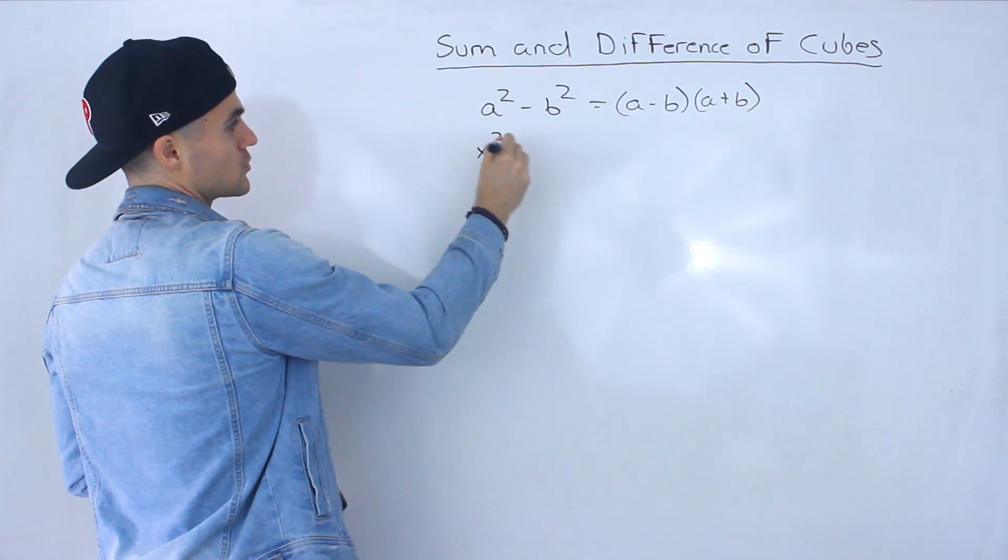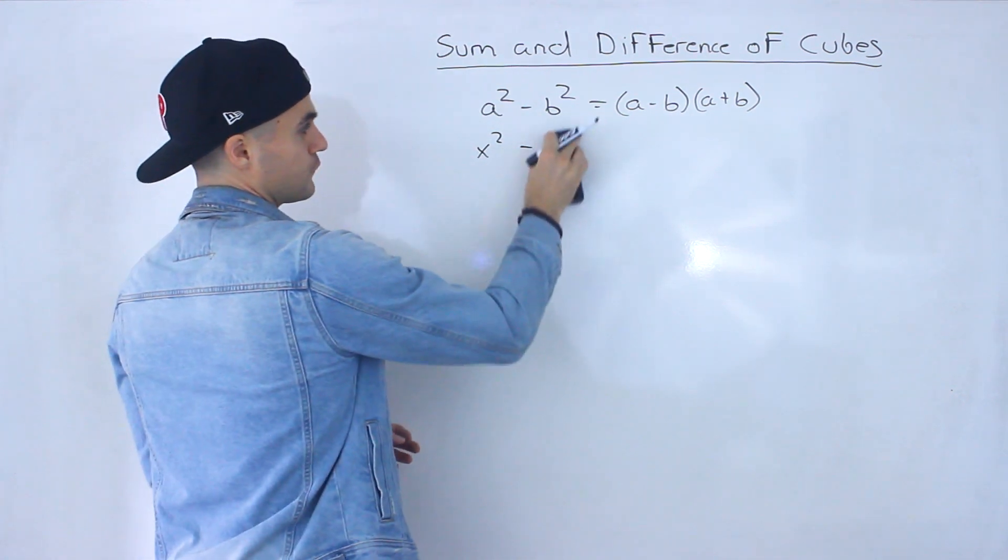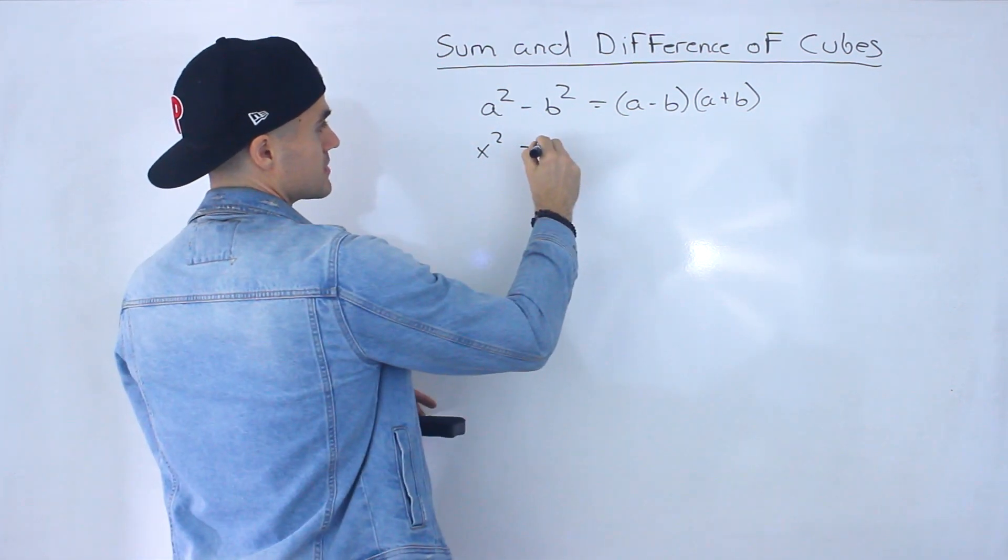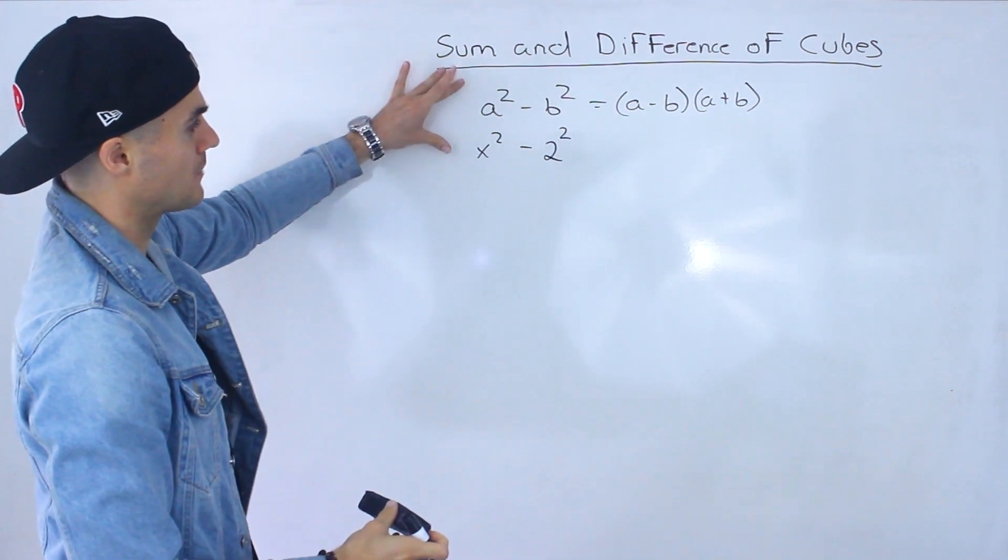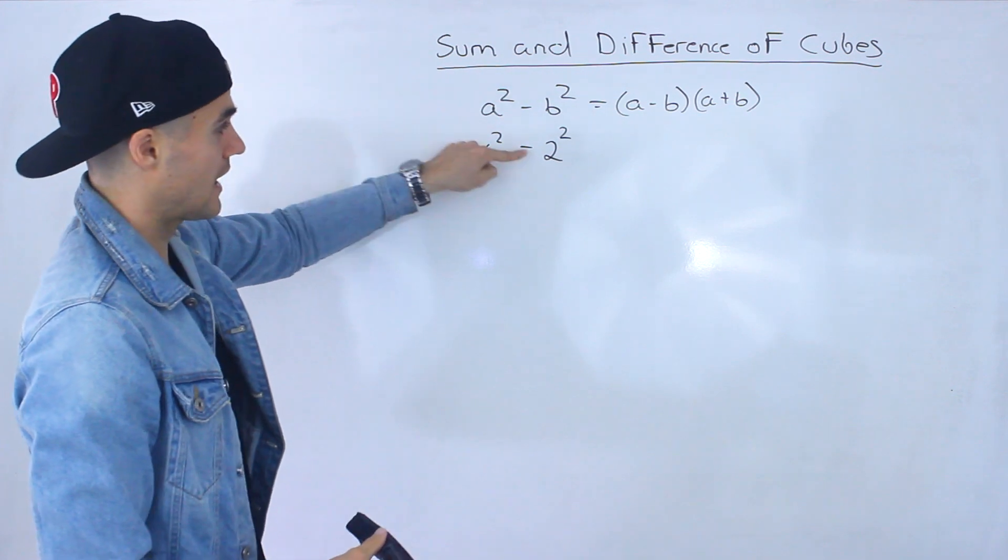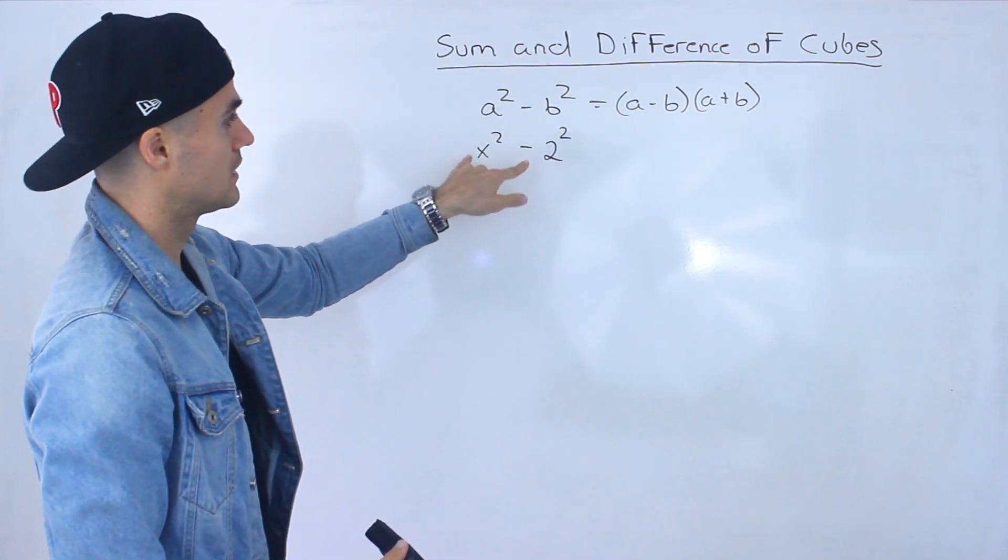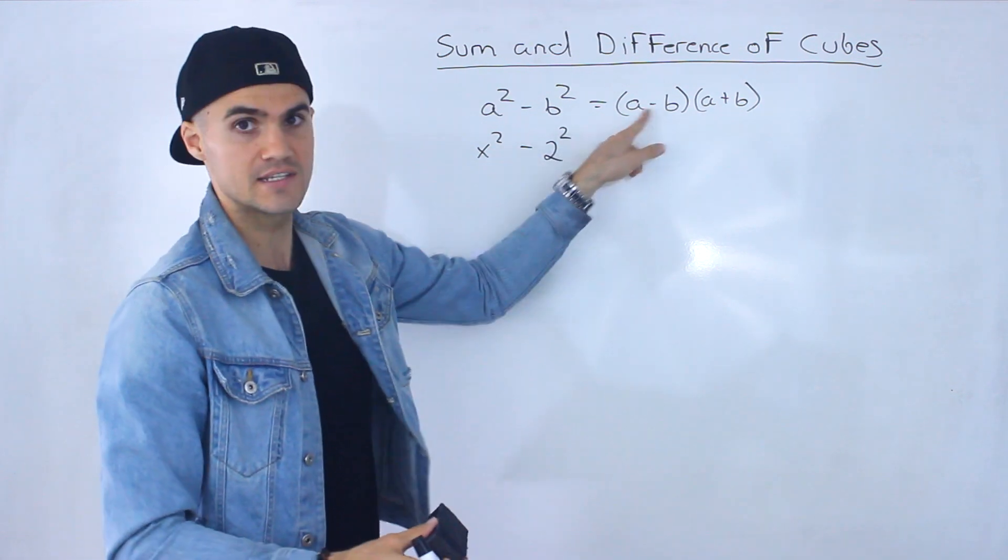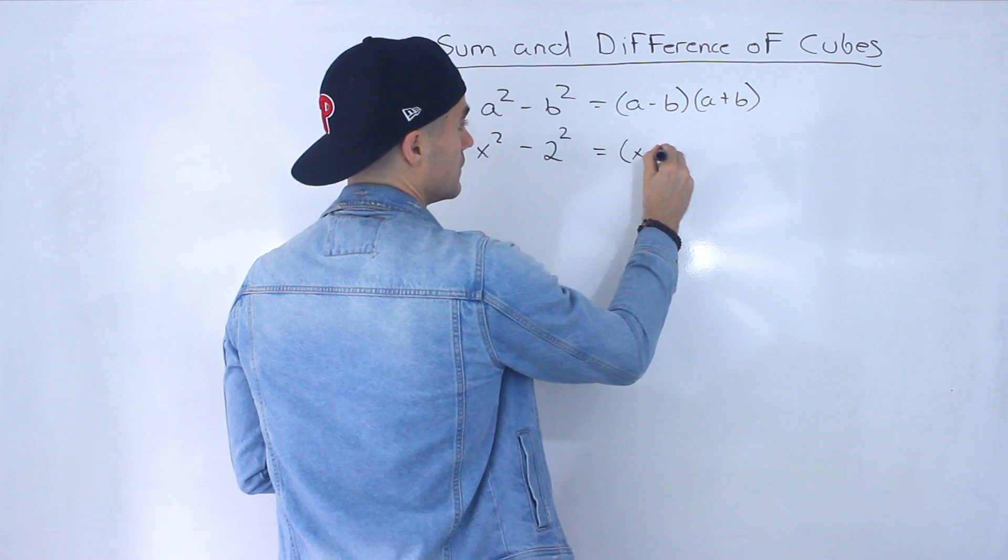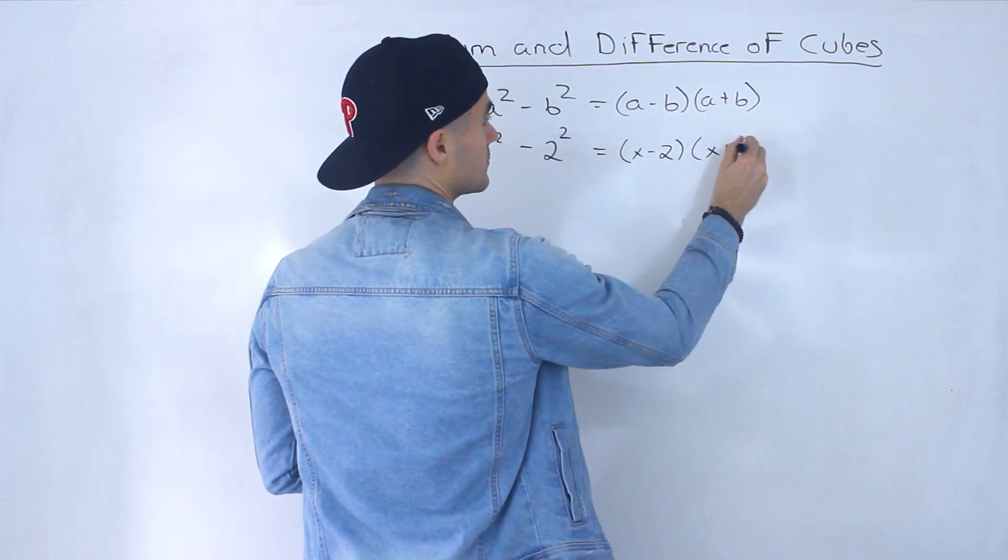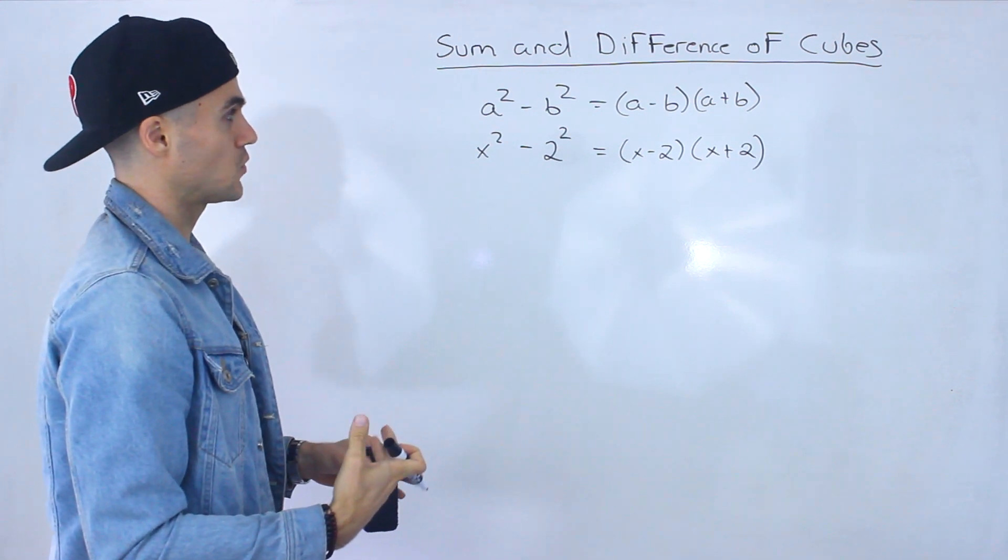So for example, if we have x squared minus 4, if you think about it, this 4 we can change as 2 to the power of 2. And then notice that it's in this format here, where this x is this a, and then this 2 is this b here. And so all we have to do now is sub in that x and 2 for these a and b. So we would have x minus 2, x plus 2.